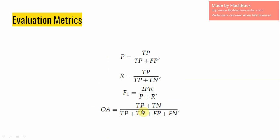To verify the validity of the proposed method, four evaluation metrics were considered: precision, recall, F1 score, and overall accuracy. In change detection, a large precision value denotes a small number of false alarms, and a large recall value represents a small number of missed detections. F1 score and overall accuracy reveal the overall performance, where larger values indicate better performance.